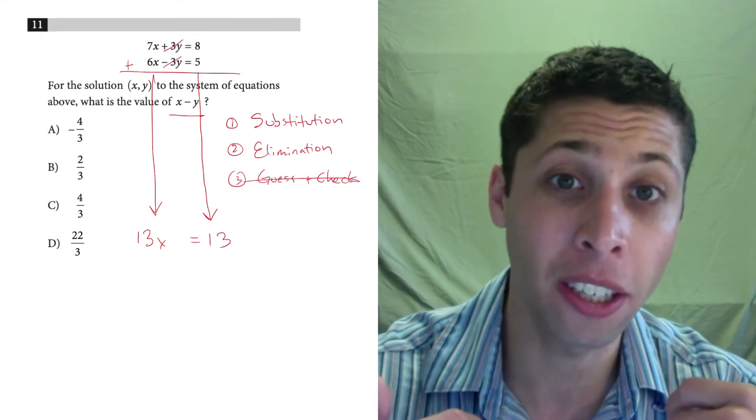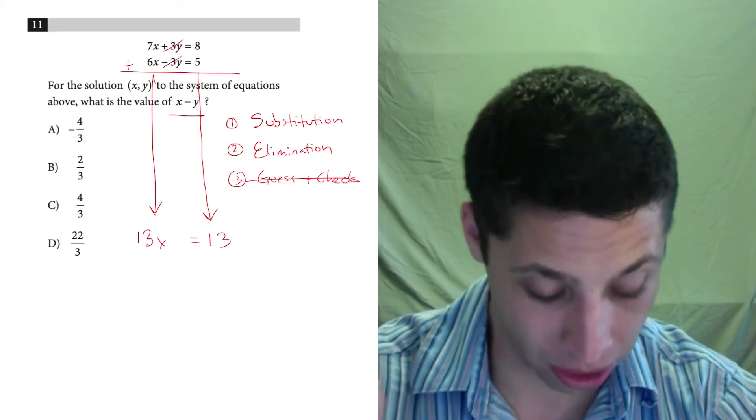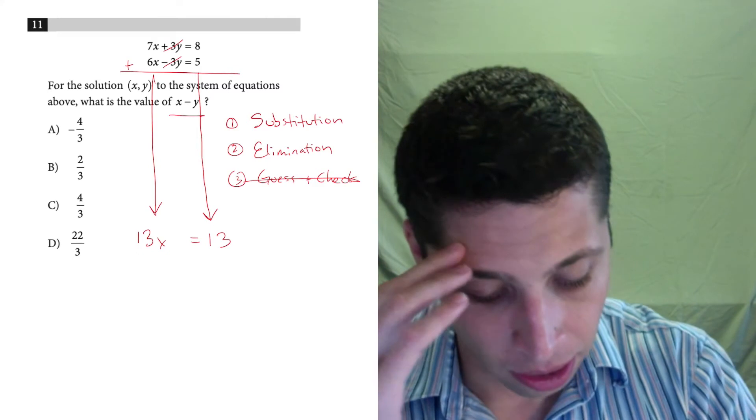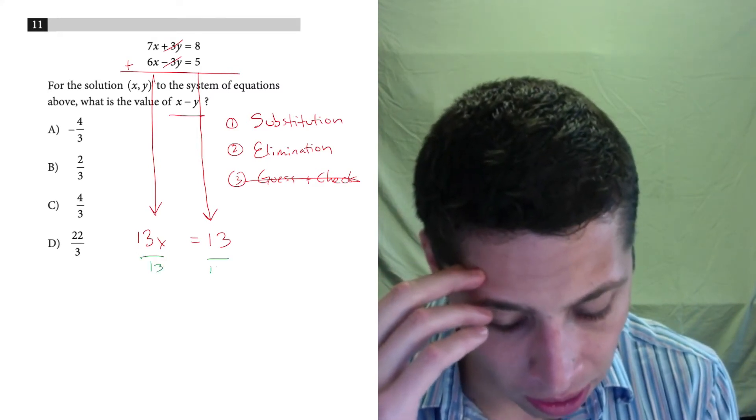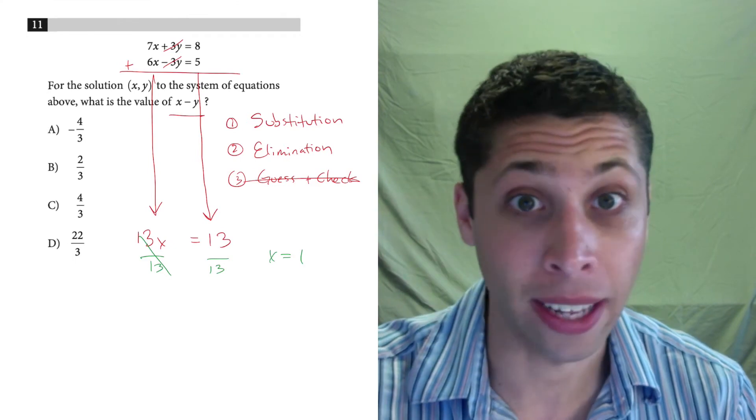But notice here, very quickly, we're down to a very solvable equation, right? 13x equals 13. Let's just divide by 13 to get that x is equal to 1. Great. That's half of my answer.